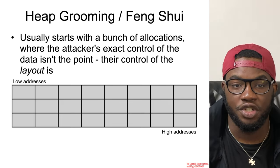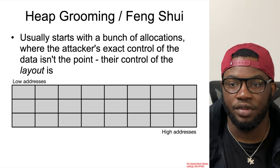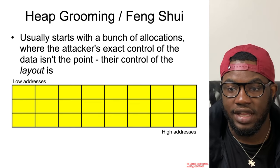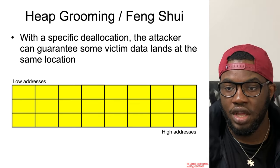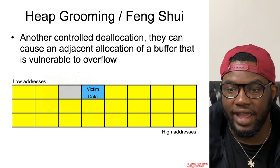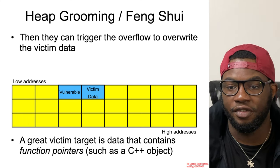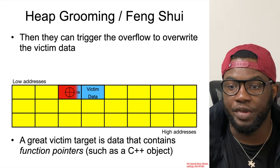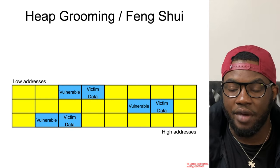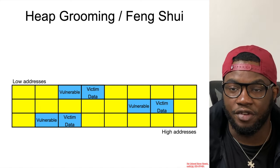This technique is referred to as heap feng shui or heap grooming. The idea is that the attacker wants to control the layout of the heap to be more reliable in determining what data will be adjacent at the time of the heap buffer overflow. It usually starts with a series of allocations where the attacker controls where a specific allocation — called the victim data — is placed, such that the vulnerable buffer is right beside it. At the time of overflow, that adjacent victim data will be overwritten. Useful targets include function pointers, such as those common with C++ objects. In reality it is more complicated, and you would often need to set up multiple such arrangements to achieve the proper heap layout for successful and reliable exploitation.